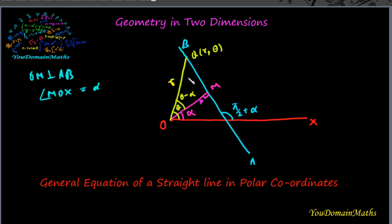So the straight line makes an angle with the OX line of pi by 2 plus alpha. Assume that Q of (r, theta) be any point on the straight line AB. Then OQ equal to r and angle QOX equal to theta.